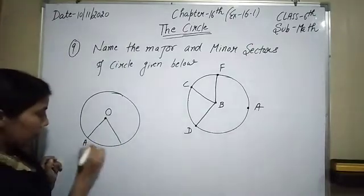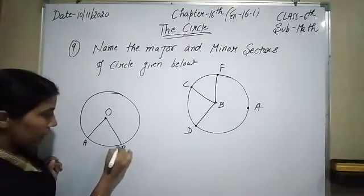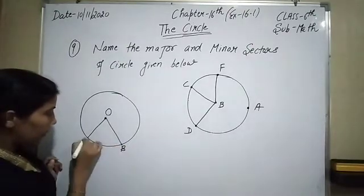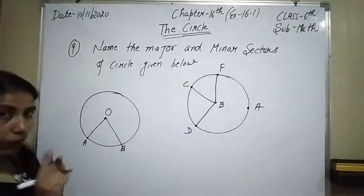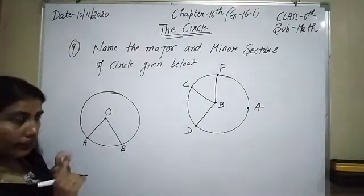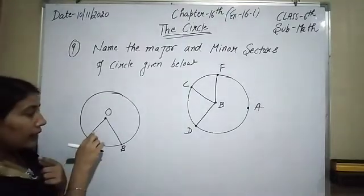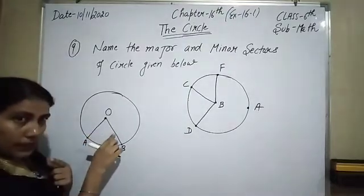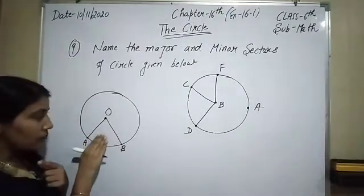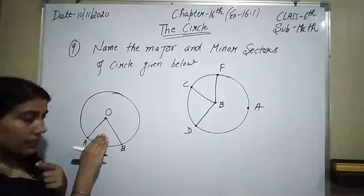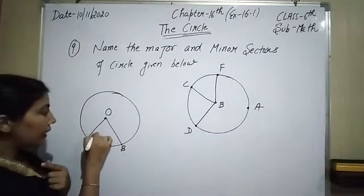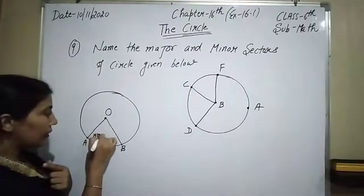I am going to write here the points A and B. The area enclosed by the radii of the circle — this smaller one is called the minor sector.